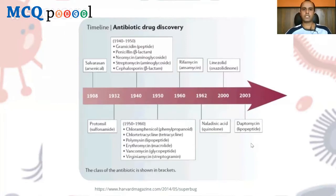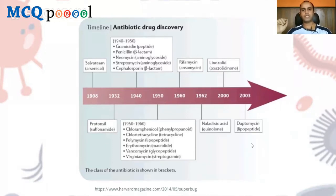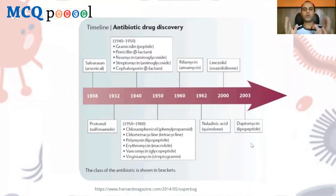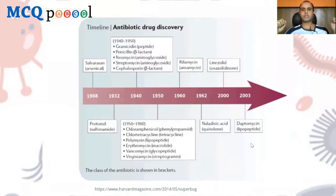The antibiotic discovery timeline shows that Salvarsan was identified in 1908, then Prontosil came in 1932 as the forerunner of sulfonamides. After the discovery of penicillin, there was a golden era from the 1940s to 1980s in which many new antibiotics were discovered. After 1980, however, the quest to discover new antibiotics has fallen significantly, with very few interested parties looking to discover new ones.